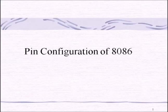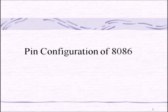In this session, we will discuss the pin configuration of the 8086 microprocessor. As we have seen what a processor is and how it processes inputs and produces outputs, now let us see the pin configuration. The need for understanding pin configuration is that if we know the functionality or importance of the pins, then only we can connect external peripherals like input-output devices and memory devices to the processor.